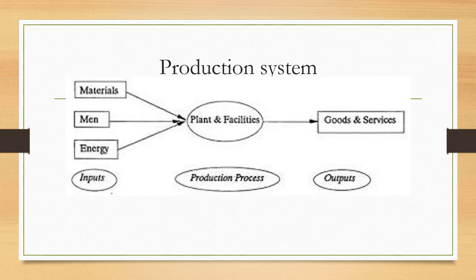To understand industrial engineering, we need to understand the production system. In any production system, there is input, output, and a certain production or manufacturing process. Input includes man, material, machine, money, and energy. Output is a product or service. There are two types of industries: production industry and service industry.